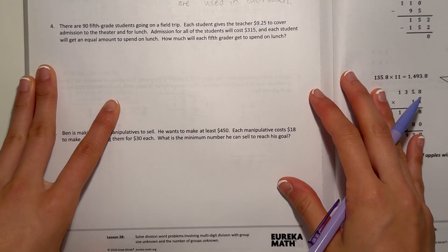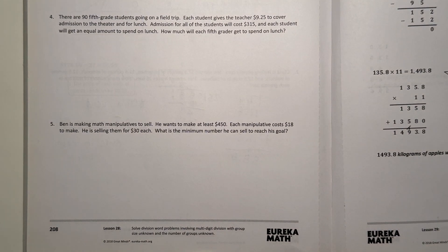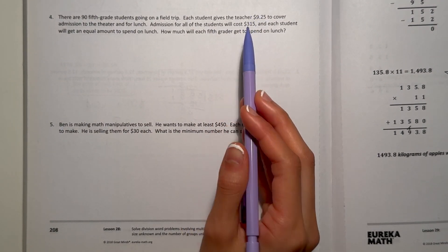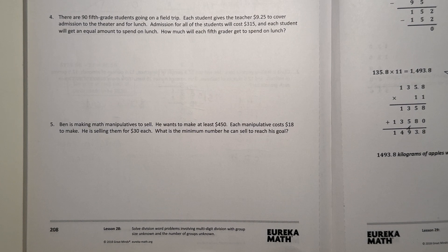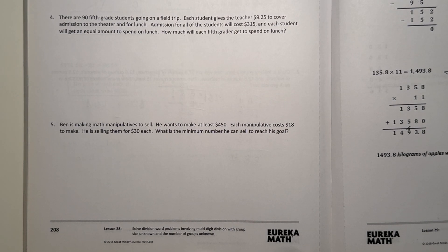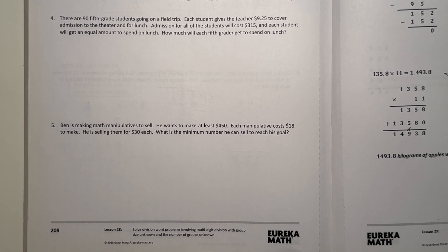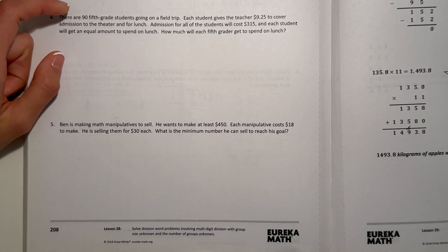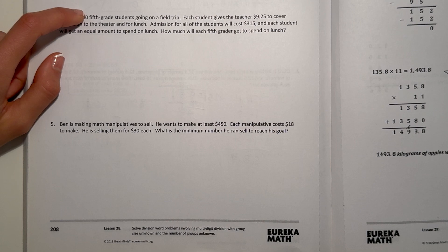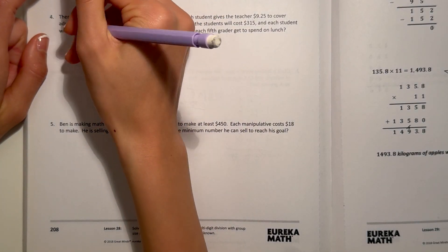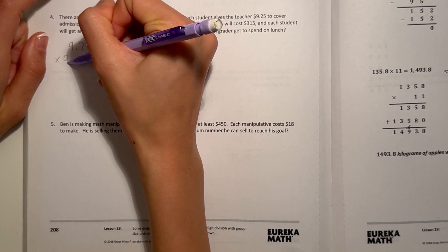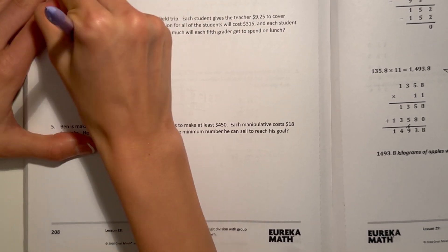Now number four. There are 90 fifth grade students going on a field trip. Each student gives a teacher $9.25 to cover admission to the theater and lunch. Admission for all students will cost $315, and each student will get an equal amount to spend on lunch. How much will each 5th grader get to spend on lunch? First we want to find out how much money they collected in total.